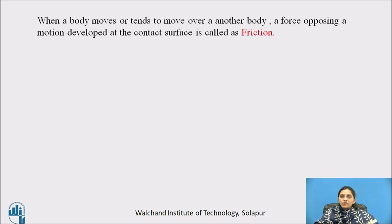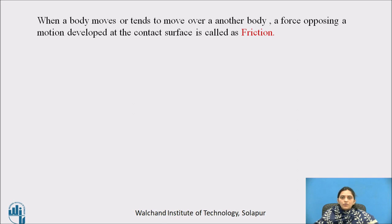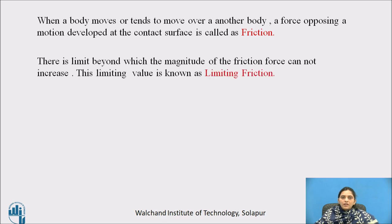When a body moves or tends to move over another body, a force opposing the motion develops at the contact surface — this is called friction. There is a limit beyond which the magnitude of the friction force cannot increase; this limiting value is known as limiting friction.